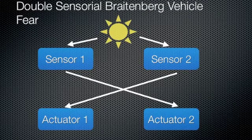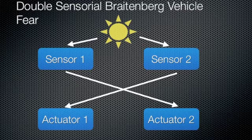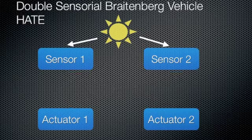A further possible change is done by the fear vehicle. The connections between sensors and actuators are the same, but now the sensor intensity controls the actuator intensity direct proportional. The plus at the arrows indicates this.